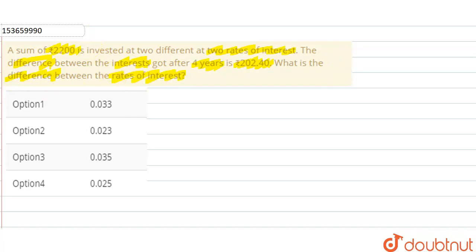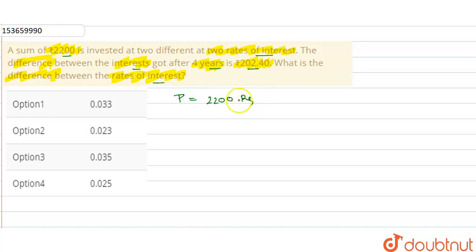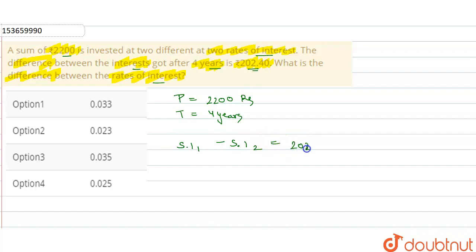So basically, the question states that a sum is 2200 rupees invested at two different rates of interest. The interest difference in 4 years is 202.40 rupees. The principal amount equals 2200 rupees, the time period equals 4 years, and the difference is: Simple Interest 1 minus Simple Interest 2 equals 202.40 rupees.